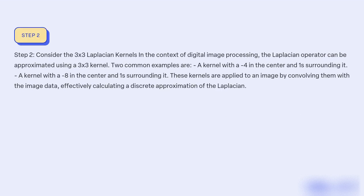Step 2: Consider the 3x3 Laplacian kernels in the context of digital image processing. The Laplacian operator can be approximated using a 3x3 kernel. Two common examples are a kernel with -4 in the center and a kernel with -8 in the center. These kernels are applied to an image by convolving them with the image data, effectively calculating a discrete approximation of the Laplacian.